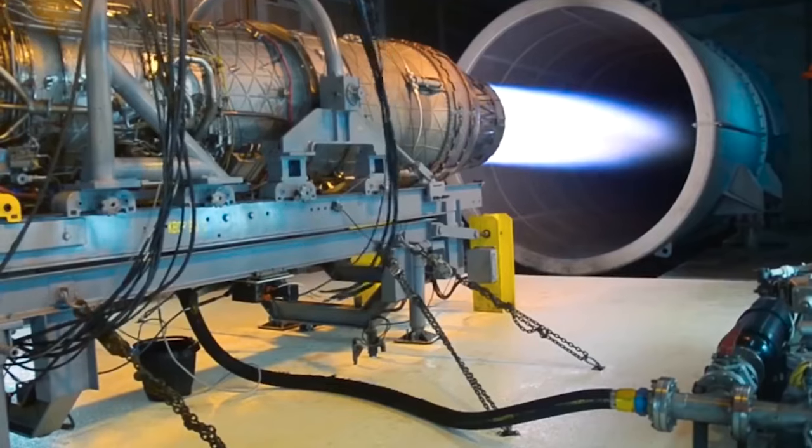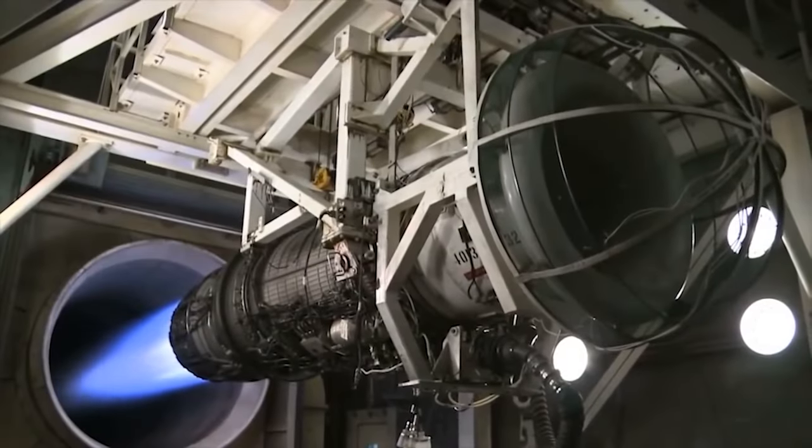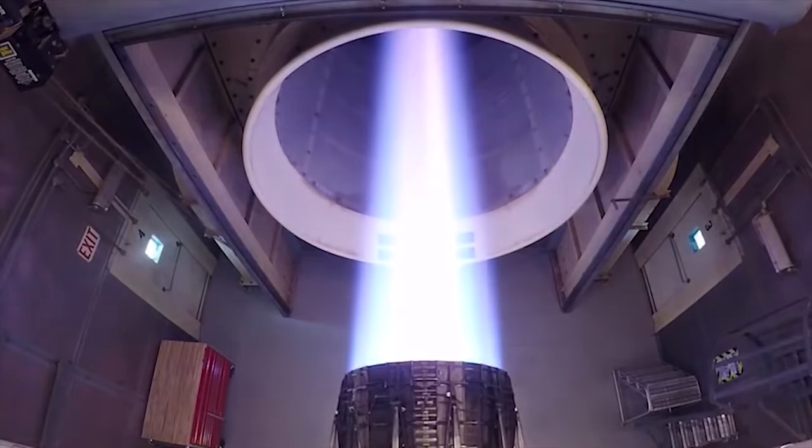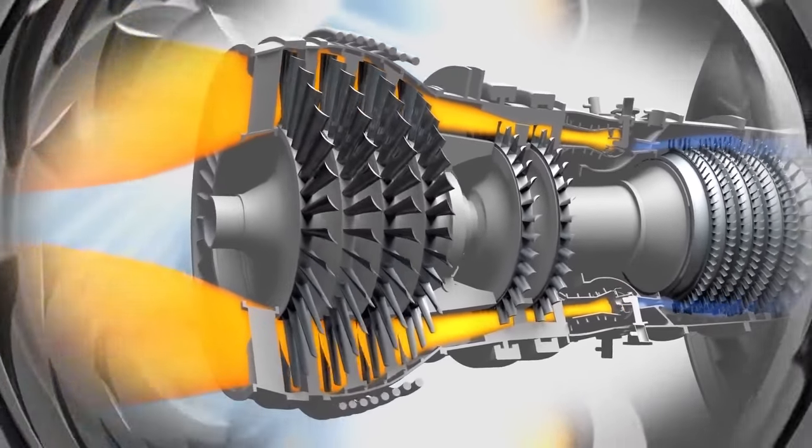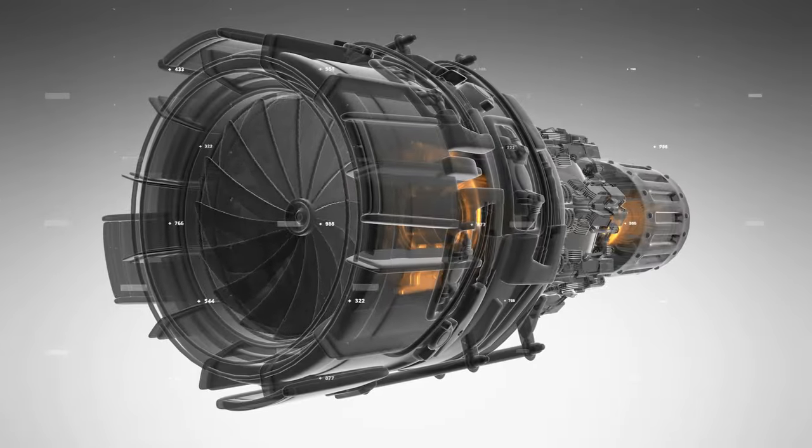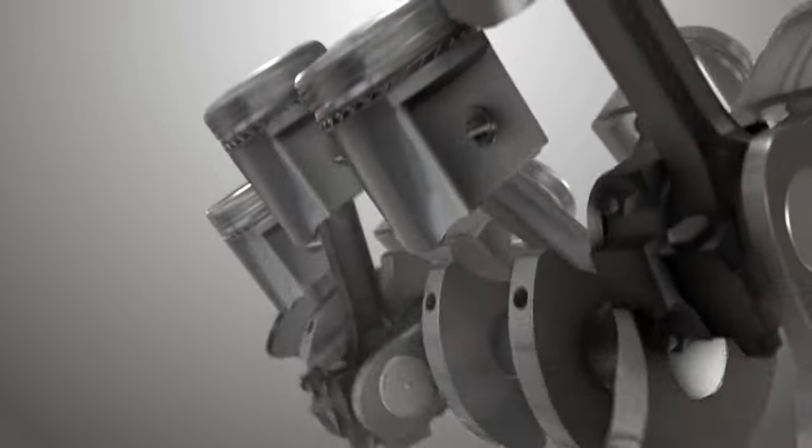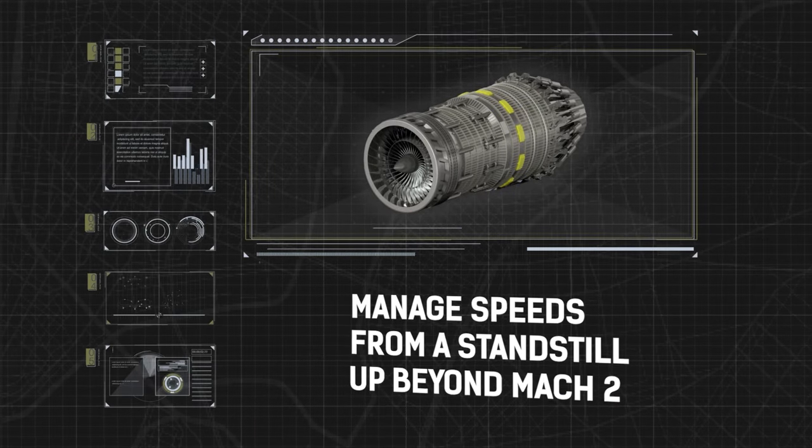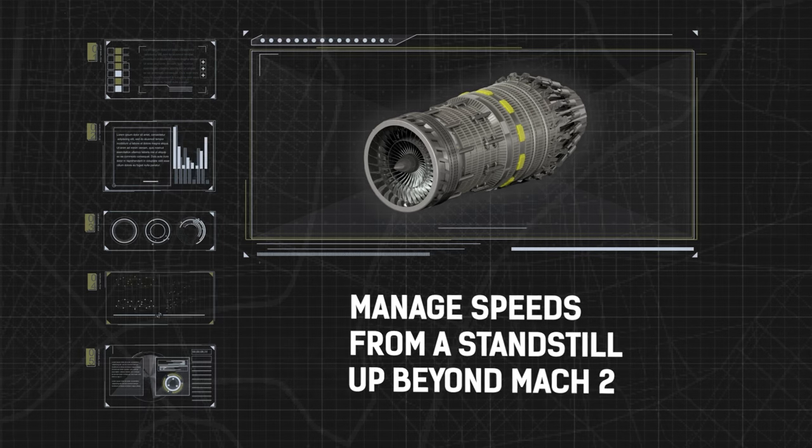But before you start thinking that sounds too good to be true, let's break down the difference between a turbojet, ramjet, and scramjet engines. They are all forms of jet propulsion, but they have a number of fundamental differences. Turbojet: A turbojet uses a fan to suck in air and then squeezes that air with a compressor. The compressed air is then mixed with fuel and ignited, similar to how a piston compresses the air-fuel mixture in a car. Turbojets can manage speeds from a standstill to beyond Mach 2, but they can't sustain hypersonic speeds of Mach 5 or more.